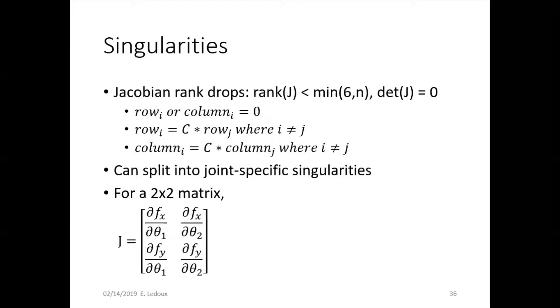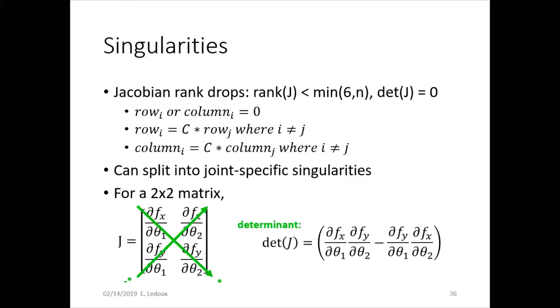You can also split it into joint-specific singularities. For a two-by-two matrix, you can see this is how the determinant would be calculated. So if you set that equal to zero, you can solve for the joint positions.